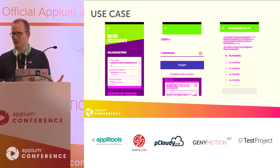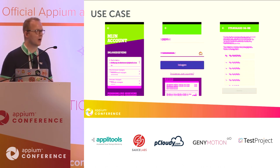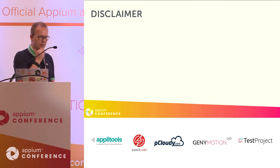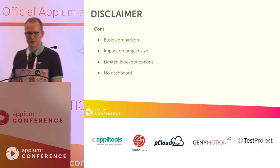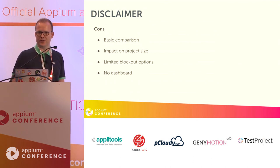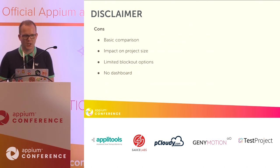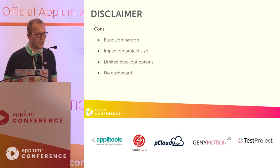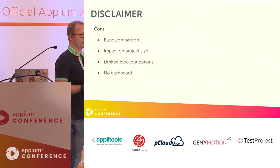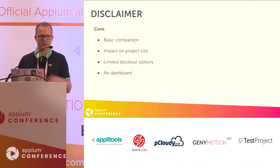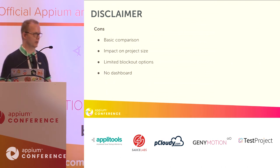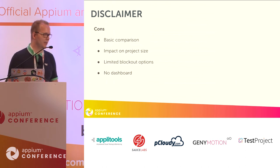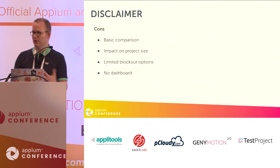For us, it was really useful to have this within our pipeline. Now you've seen it all, you might think this is really awesome — and I must agree — but there's also a disclaimer. I want to start with the cons and then move to the good things. First, as you might have heard this morning, this is just a basic pixel-by-pixel comparison, so it might give you results that may or may not be an issue. On the other hand, it's open source. It can also have an impact on your project size because the module has no dashboard and no cloud service — you need to store the images somewhere. There are some limited blockouts, and we don't have a dashboard.